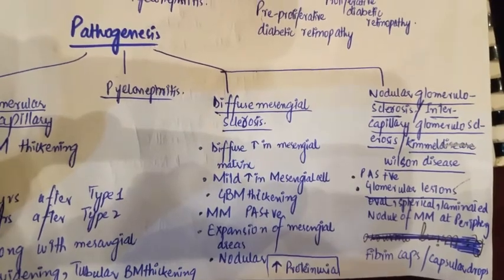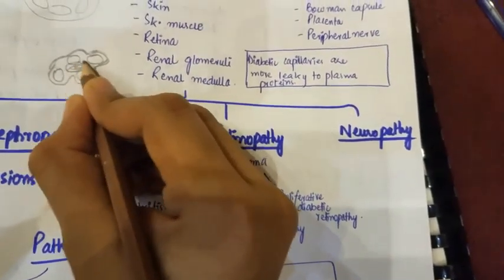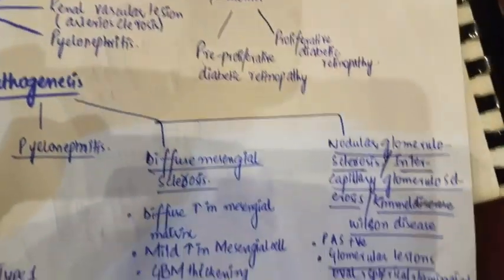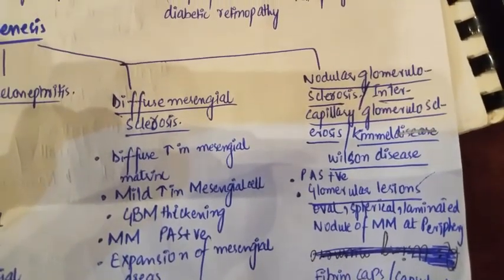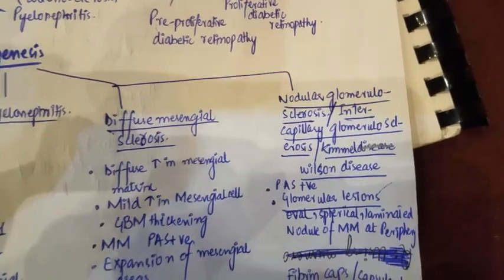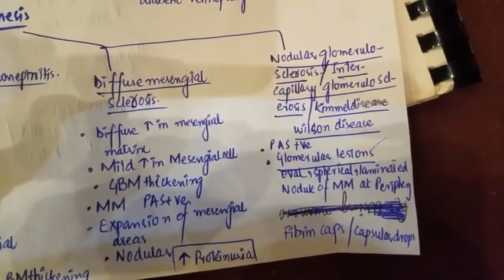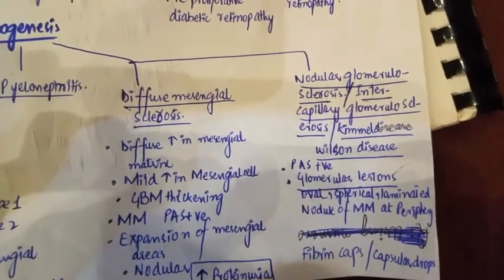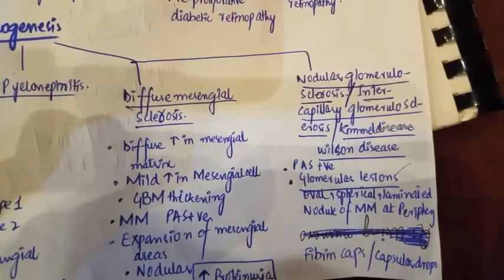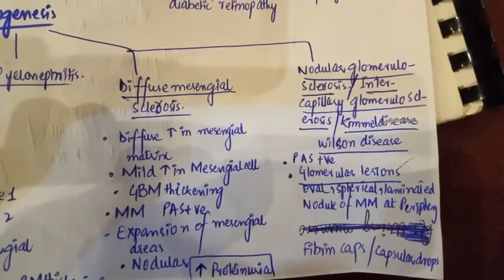Not only the glomerulus but also the tubular basement membrane undergoes thickening, and the mesangium present between the endothelial cells results in widening. The second pathology is diffuse mesangial sclerosis, characterized by a diffuse increase in mesangial matrix, proliferation of mesangial cells, glomerular basement membrane thickening, and mesangial matrix becoming positive for periodic acid-Schiff stain.